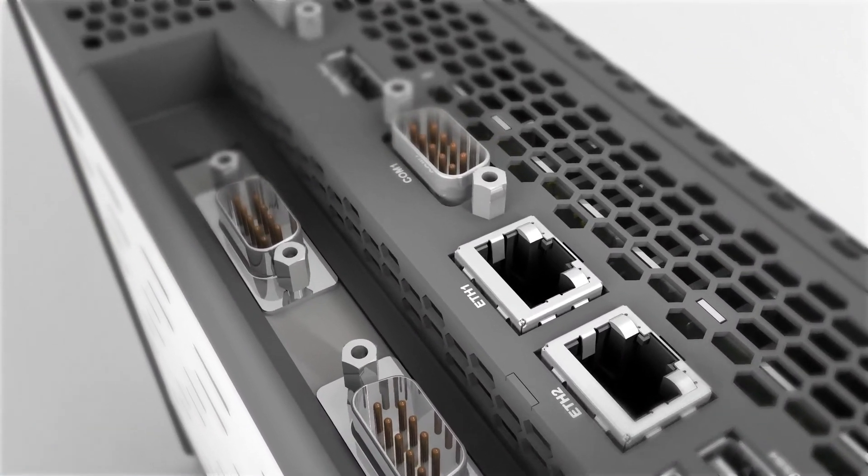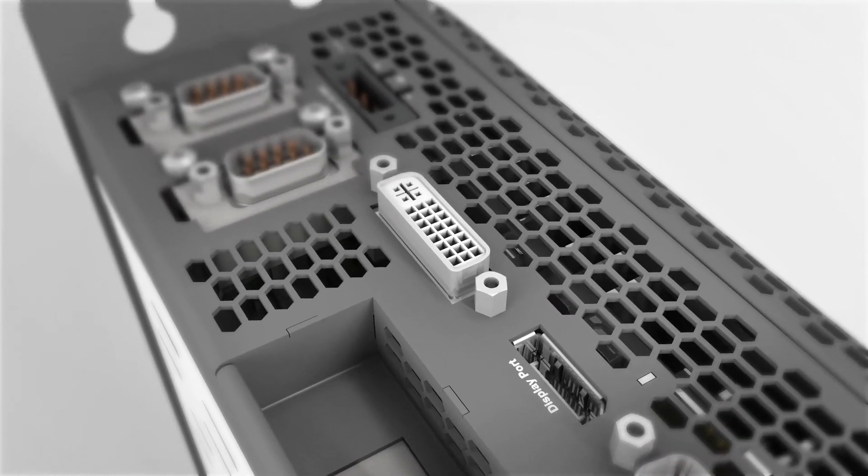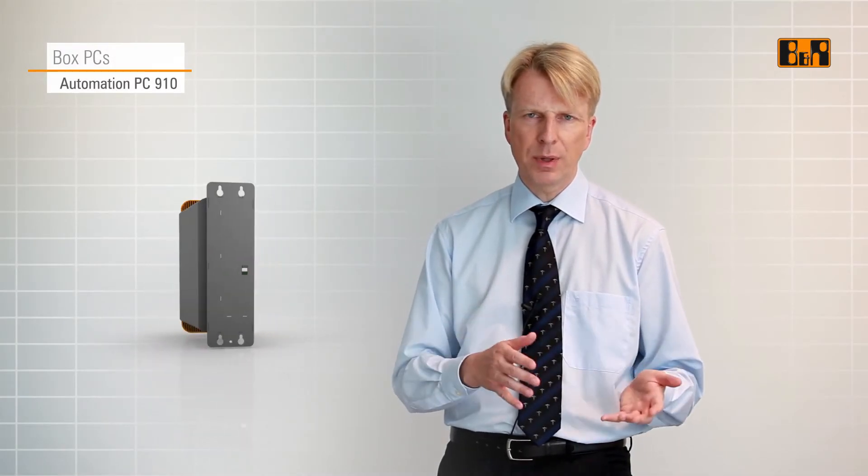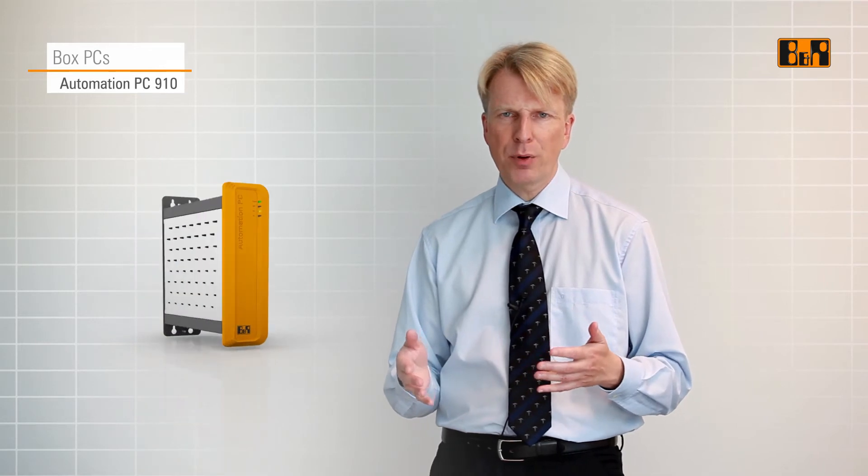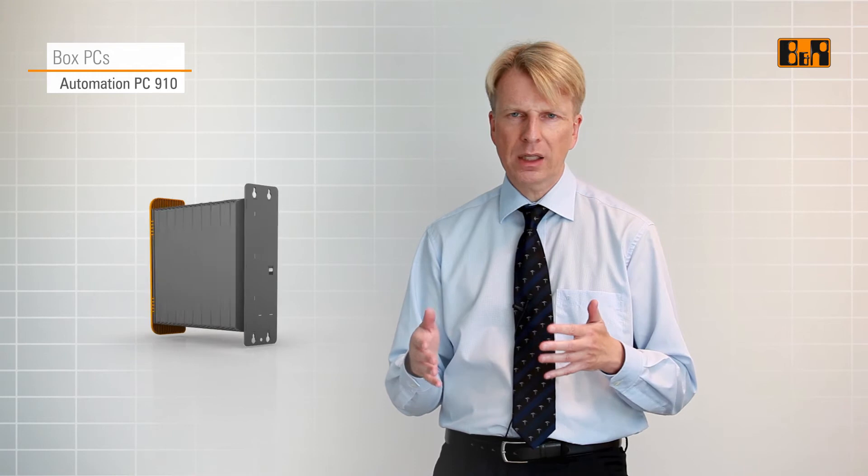We have also included a display port interface, the new standard in the office world. In addition to this, the Automation PC 910 provides a modular display interface. It can be used for dual independent display operation with two SDL lines and makes it possible to react quickly and flexibly to new trends in data transfer technology.